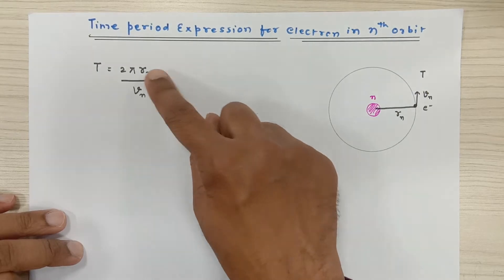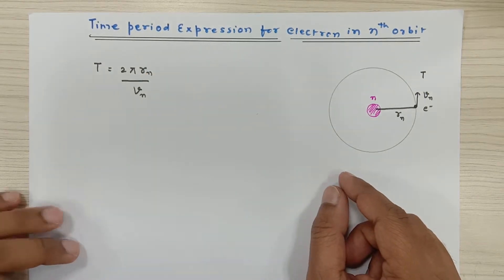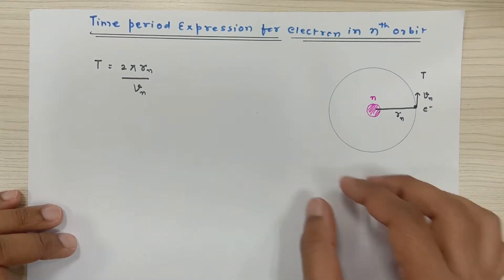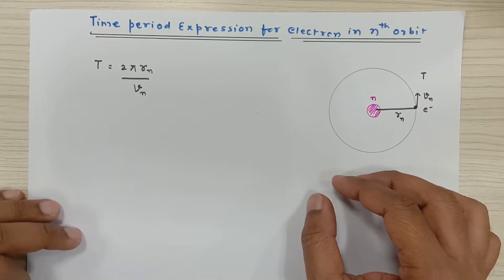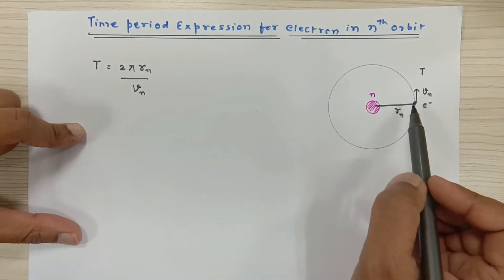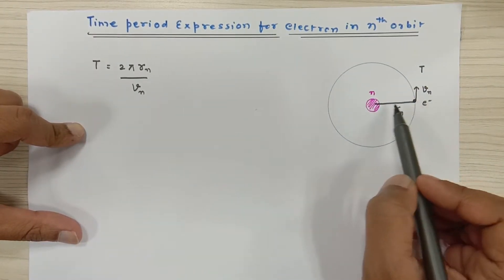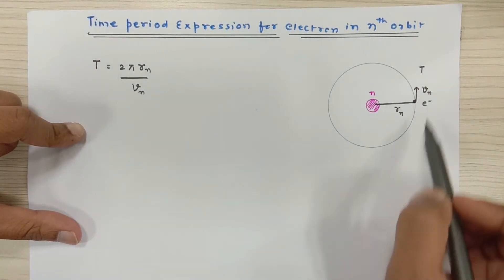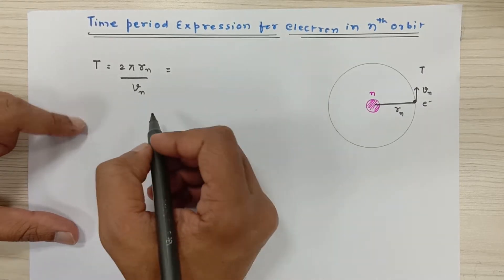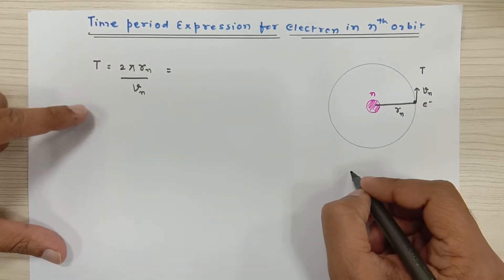Certain expressions like radius expression and energy expressions I have already derived and I'm going to put the link in the description. Since time period is equal to distance traveled upon speed, distance is equal to circumference, that is 2πr.